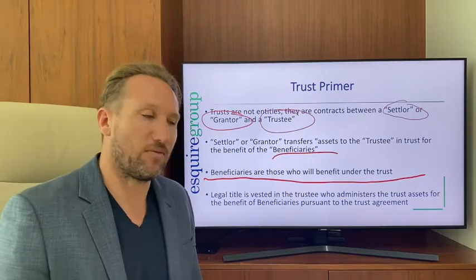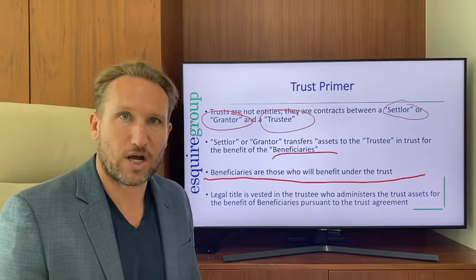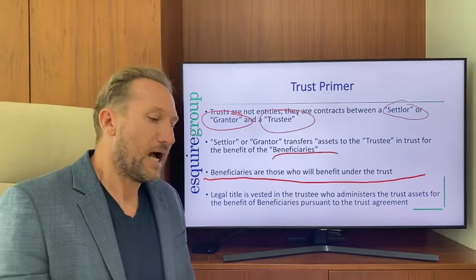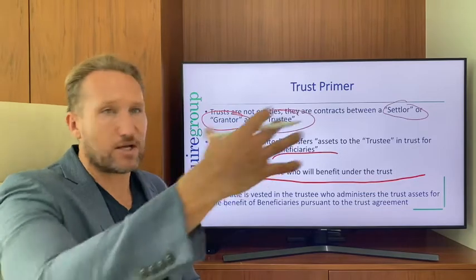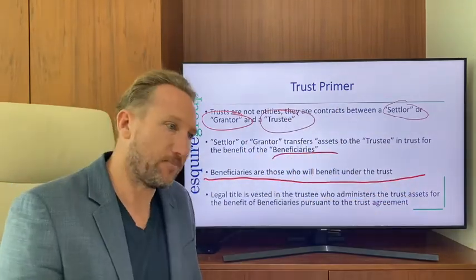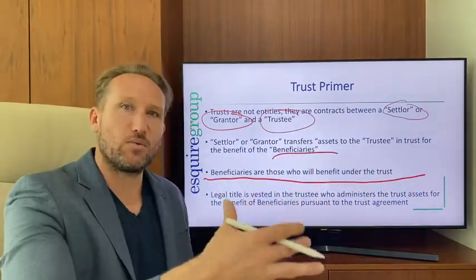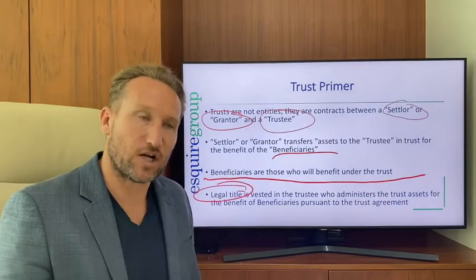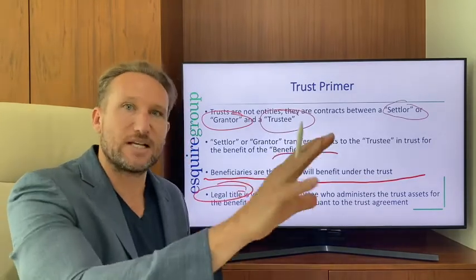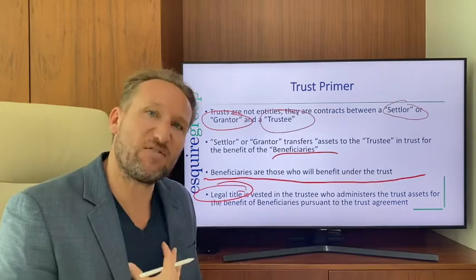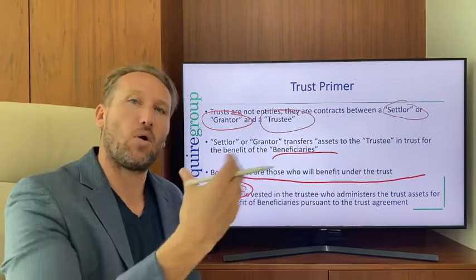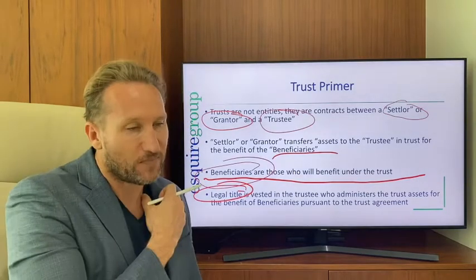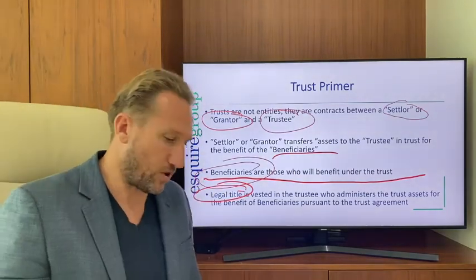A good example: if I wanted to form a trust for the benefit of my kids, I would transfer my assets to a third-party trustee. That trustee would then own those assets — legal title vests in the trustee. The trustee owns those assets, but not for their own benefit; they hold and administer them for the benefit of the beneficiaries. That's basically how a trust works.